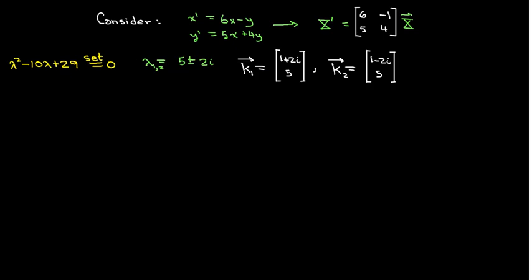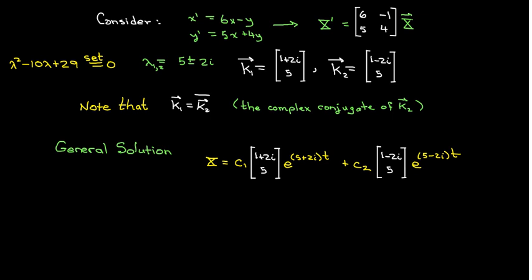So I've got my eigenvalues and eigenvectors. The problem with this is that we have complex conjugates. We can write the general solution just the way this is, and this is a solution. However, in this course, we want to avoid complex-valued solutions, solutions which are written in terms of complex numbers.